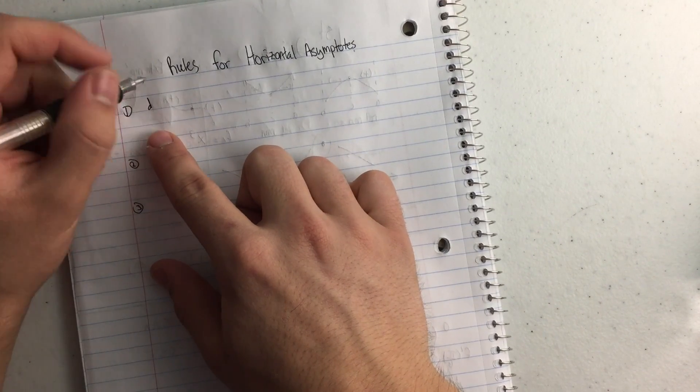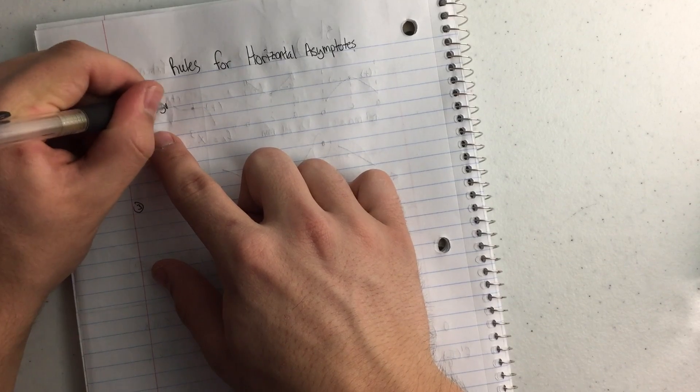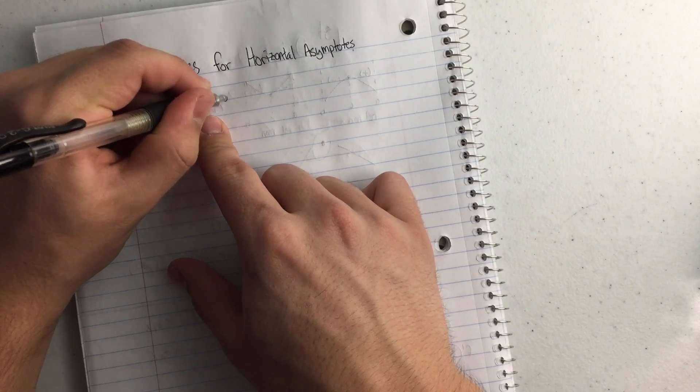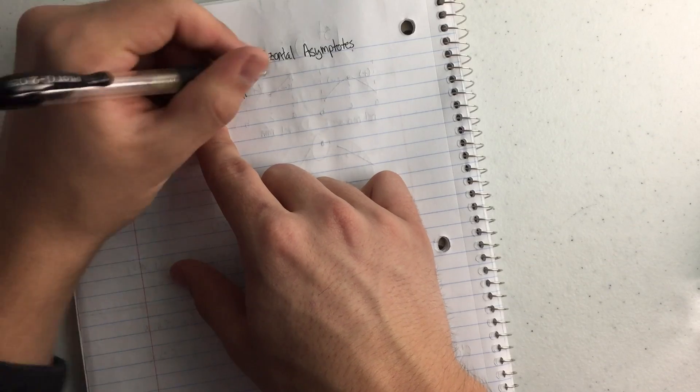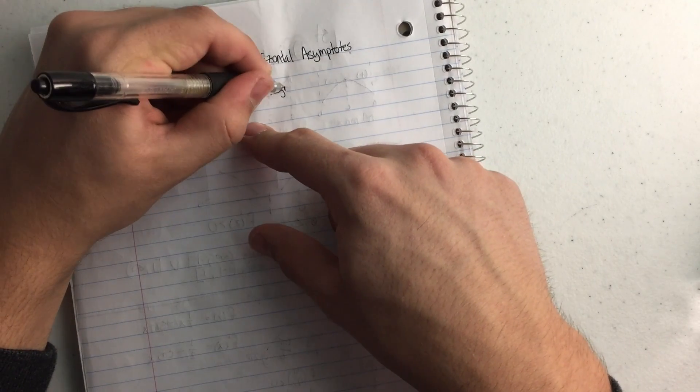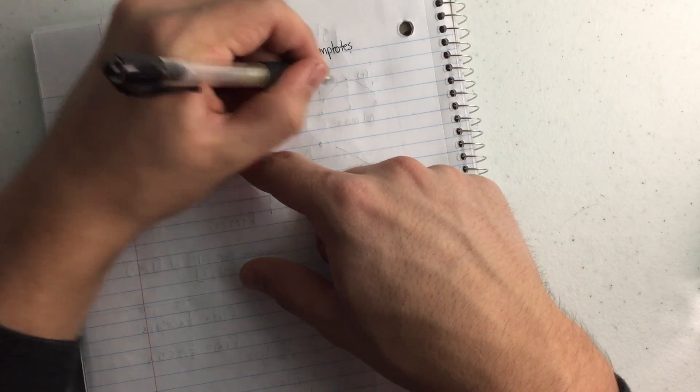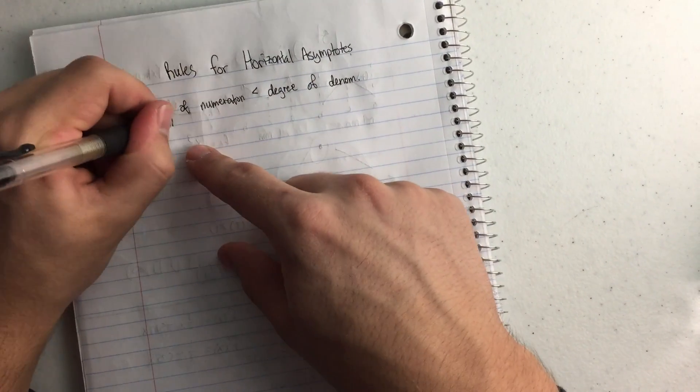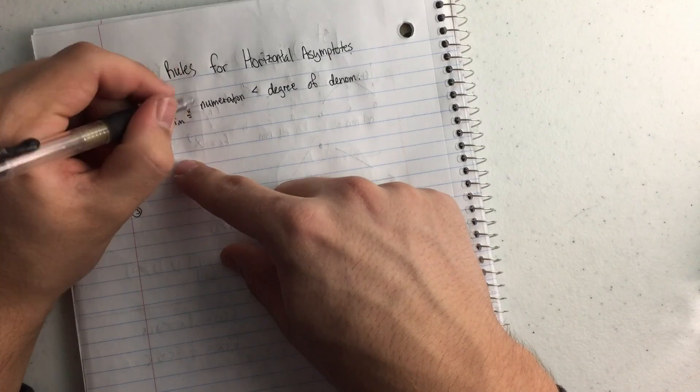So the first rule I have, and this is going to take a while to write out, but basically it says the degree of the numerator is less than the degree of the denominator, then the limit equals zero.